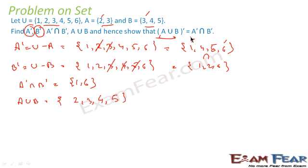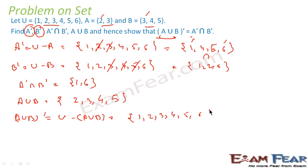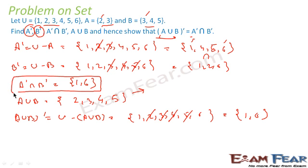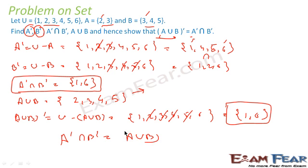Now we are asked to prove that (A union B) complement equals A complement intersection B complement. First find (A union B) complement, which is U minus (A union B). U is {1, 2, 3, 4, 5, 6}. Subtract elements of A union B: subtract 2, 3, 4, 5. What we get is {1, 6}. So (A union B) complement equals {1, 6}. And we already found A complement intersection B complement equals {1, 6}. Both are the same, thus proving A complement intersection B complement equals (A union B) complement. Thank you.